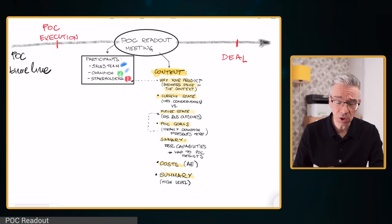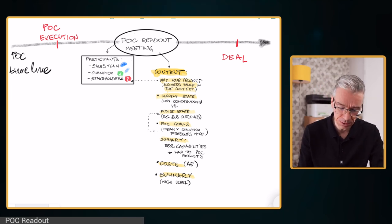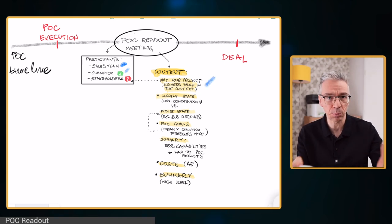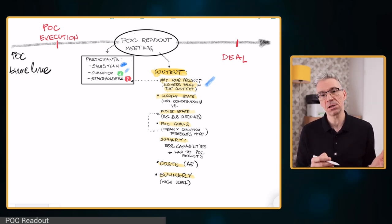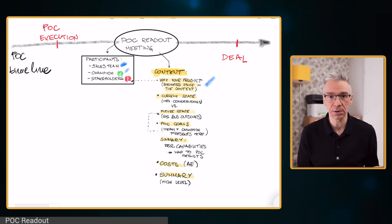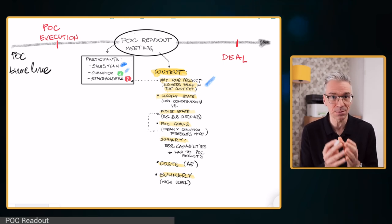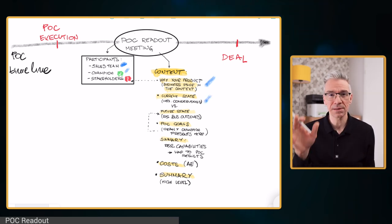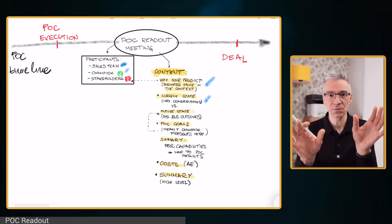What is the content? Probably a PowerPoint presentation. The AE leads that presentation and first does a short introduction about our product — why our product. This shouldn't be too long, but we have to assume some stakeholders have never heard our product pitch, so this should be a very condensed product pitch. The next thing is a side-by-side comparison of current state versus future state — current state is without our product, future state is with our product — but not the architecture. We want to describe the actual business impact.